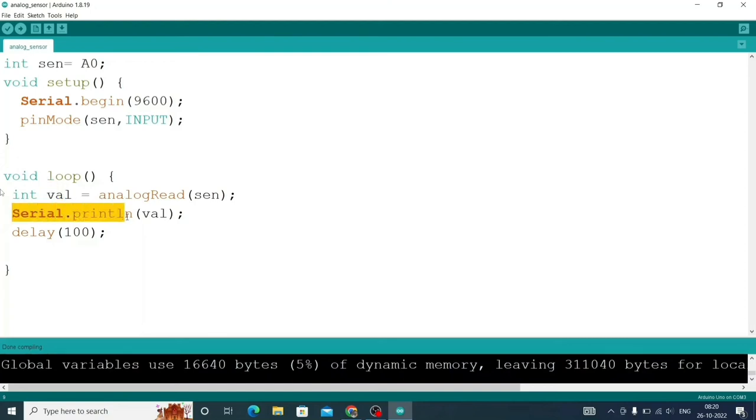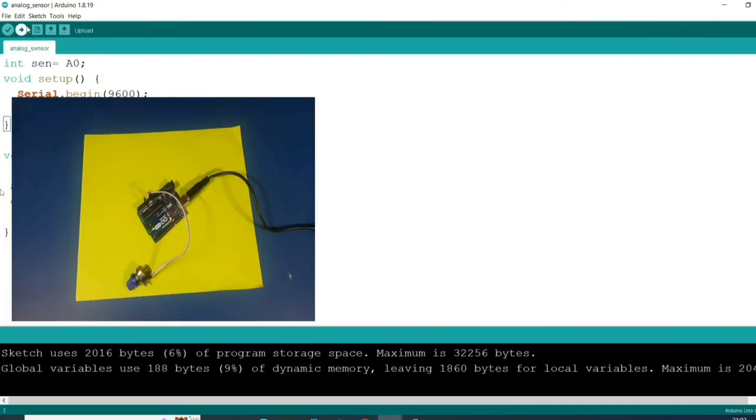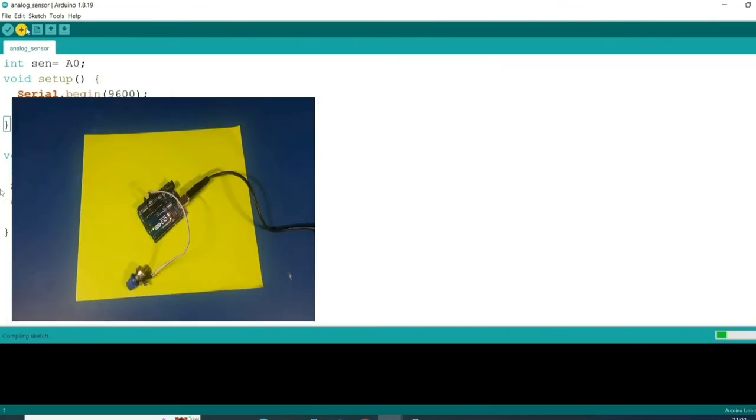So in this way we are able to print the value. So guys let's upload the code and see the value in serial monitor.